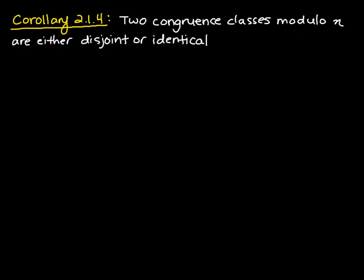In the next theorem, we want to focus on an important point: two congruence classes modulo n are either disjoint or identical. We won't skip the proof — it is an important fact. So if we are given any two congruence classes, they are either distinct — meaning not equal — or they are the same. There is no other option.